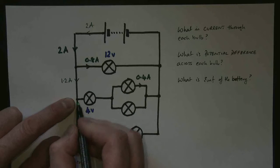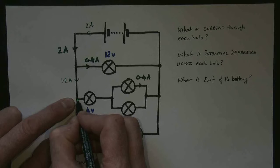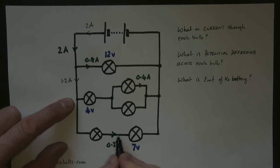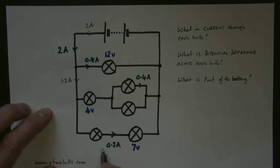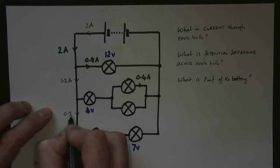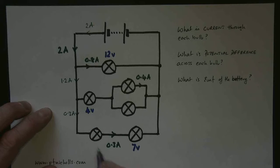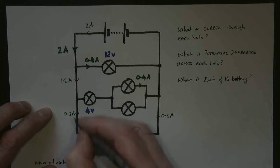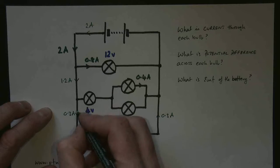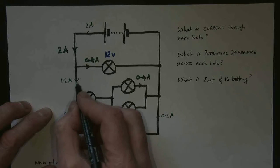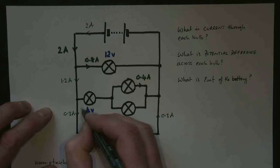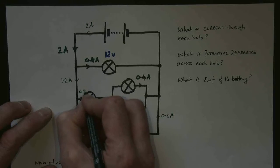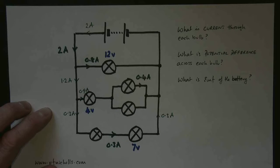We get down to another junction — we have 1.2 amps going in, some current going one way (we don't know how much), and some current going the other way. We do know that this branch is giving us 0.3 amps, so 0.3 amps must be flowing down there as well. These are all in series, so 0.3 amps must be flowing up there too. Using these two values, 1.2 amps is coming in and 0.3 goes out, so the current flowing into that first bulb must be 0.9 amps.